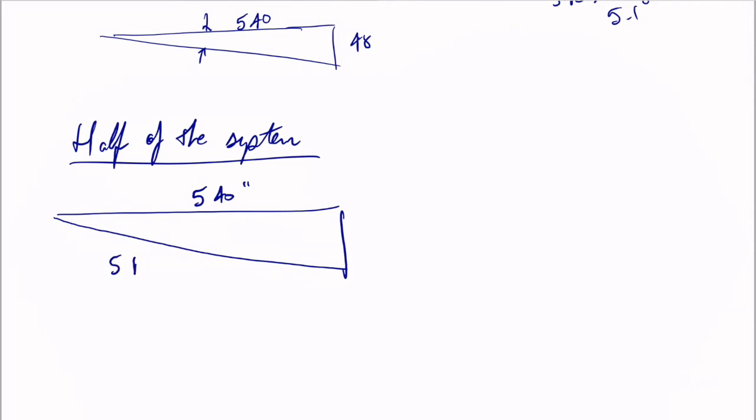Let's take a look at half of the system, just because it's easy to look at triangles like this. The run is 540 inches. Cable with slack is 540 plus 1.3 inches. And we want to know what this is here.